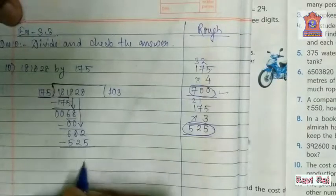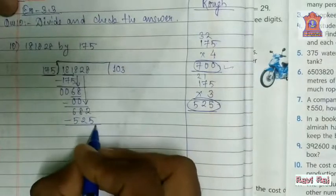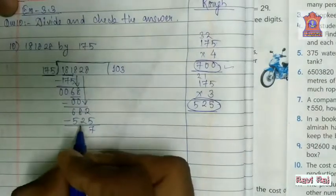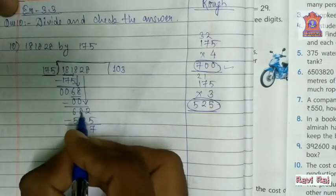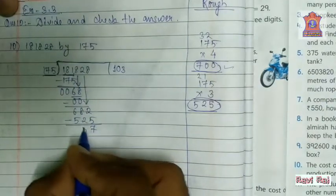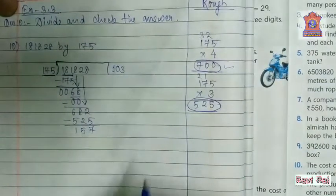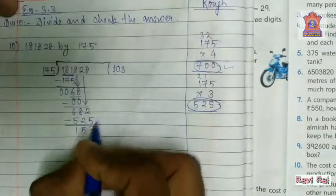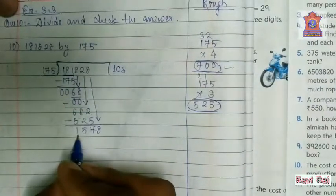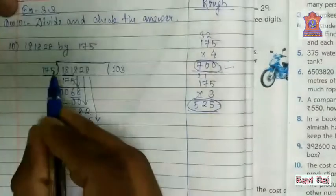Now subtract it. 12 minus 5 is 7. What is left here? 7. 7 minus 2 is 5. What is left here? 6. 6 minus 5 is 1. Now the value is 157. What comes down next? 8. Here we have got 1578. So we have to check if it is in the 175 table.